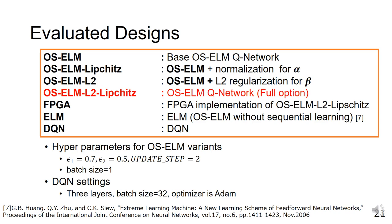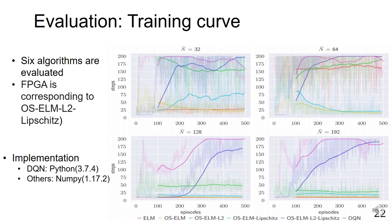These graphs show the learning curve when N is 32, 64, 128, and 192 respectively. In this evaluation, since OS-ELM-L2-Lipschitz and our FPGA design use the same algorithm, only the former is evaluated. Therefore, the six designs we evaluated are ELM, OS-ELM, OS-ELM-L2, OS-ELM-Lipschitz, OS-ELM-L2-Lipschitz, and DQN.